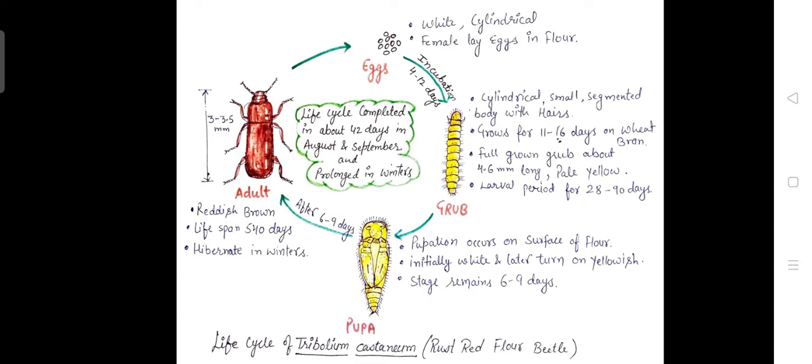The larval period remains 28 to 90 days. After this period, the grub converts into pupa. The pupa is on the surface of flour. Initially, the pupa is white in color, but later on it turns into yellowish color. This stage remains for 6 to 9 days.